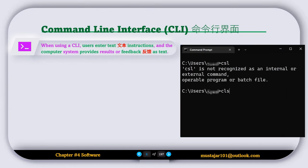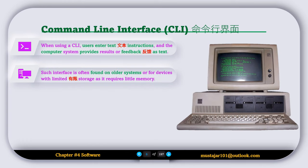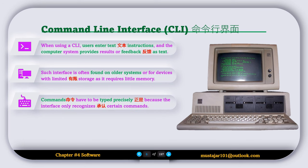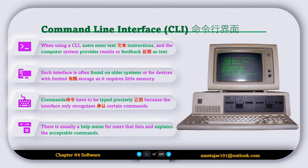Now let's talk about the CLI or command line interface. When using a CLI, the user enters text instructions and the computer system provides results or feedback as text. Such an interface is often found on older systems or devices with limited storage, as it requires little memory. Commands have to be typed precisely because the interface only recognizes certain commands. There is usually a help menu that lists and explains the acceptable commands.